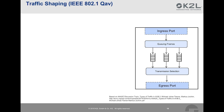Now we come to the third AVB substandard, IEEE 802.1QAV. As discussed, traffic shaping is implemented in AVB switches with the intention to avoid packet bunching and to ensure that the maximum allowed latency between source and sinks is not exceeded. In the picture, we see two ports of an AVB switch: an ingress port, where frames enter into the switch, and an egress port, where traffic exits the switch.